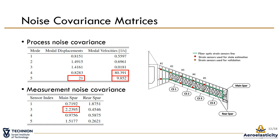Shown here are the noise covariance values found with the designated testing described earlier. Note the values of modes 4 and 5 in the process noise covariance — they are significantly higher than the others, meaning the Kalman state estimator will rely less on them in the prediction. Similarly, the estimator will rely less on sensor number 3 at the main spar in the correction phase. The locations of the sensing points used as input are marked in red on the drawing on the right, while sensing points number 2, marked in orange, are the validation points for the following slides.